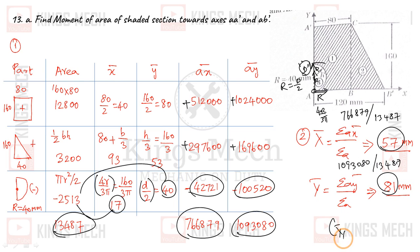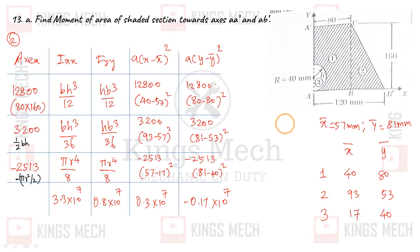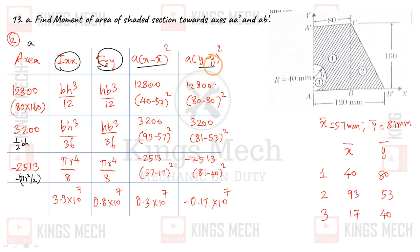So our centroid values are x̄ = 57 mm and ȳ = 81 mm. Now the next challenge is to find IXX and IYY. The formula needed is: I = summation of (A × (x − x̄)²) for IYY and summation of (A × (y − ȳ)²) for IXX.